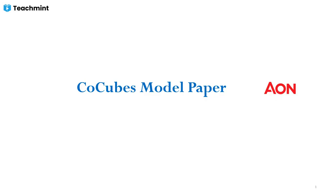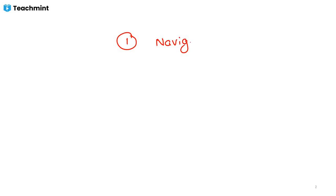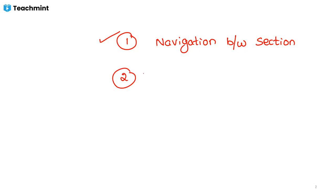One good advantage with the Co-cubes model paper is that navigation between sections is allowed. You can move from one section to another — few test platforms don't allow this. In Co-cubes and the ION test platform, navigation between sections is allowed. You can also navigate between questions; suppose you started the first question and want to go to the last question — navigation between questions is also allowed.